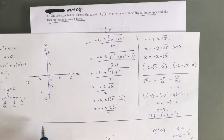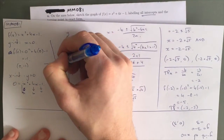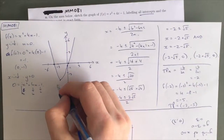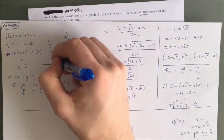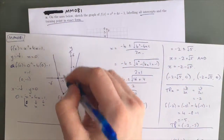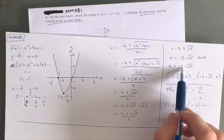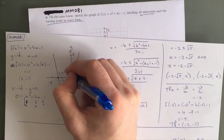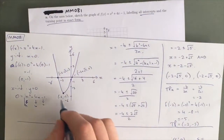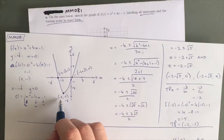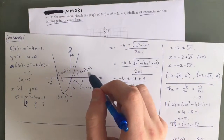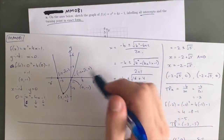We can see this is a pretty good-looking parabola, and now all we need to do is draw it through the points — something like this. Try not to make it look too pointed; that was too pointed on my part. Now we need to label everything, because the question says to label all intercepts and the turning point in exact form. Our first x-intercept is (-2 - √5, 0), our second x-intercept is (-2 + √5, 0), our turning point is (-2, -5), and our y-intercept is (0, -1). We've labeled all intercepts and our turning point, so this is our final answer for this graph.